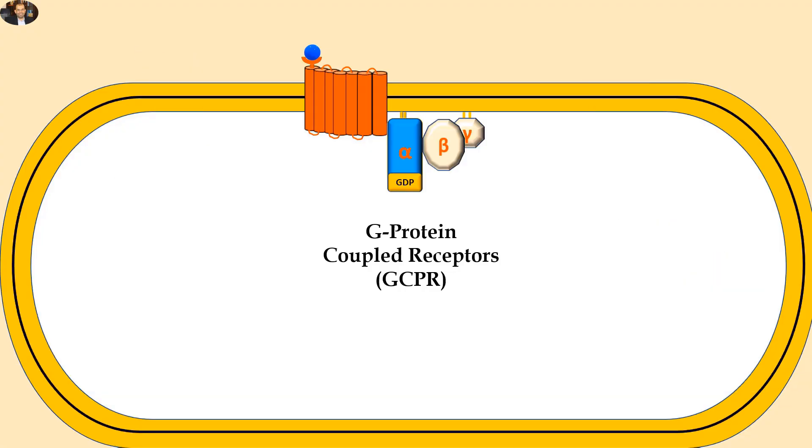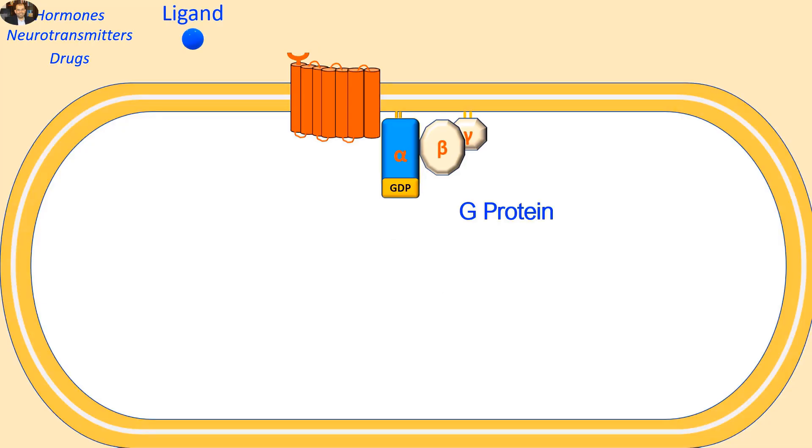The second type is G-protein-coupled receptors. In this type of signaling, binding of the ligand to its extracellular binding site induces conformational change in the transmembrane receptor. This conformational change results in activation of the alpha subunit of the G-protein.